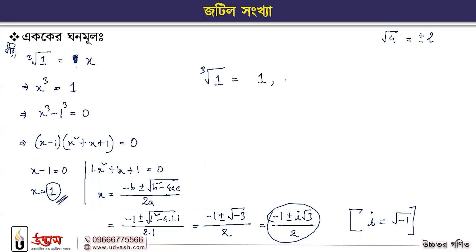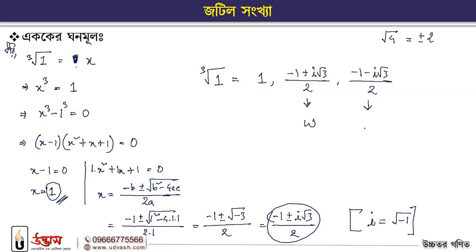So we have to write 1. We have to write minus 1 plus i root over 3 divided by 2. We also have to write minus 1 minus i root over 3 divided by 2. This is a very good answer — the value of 1 gives us these two values.